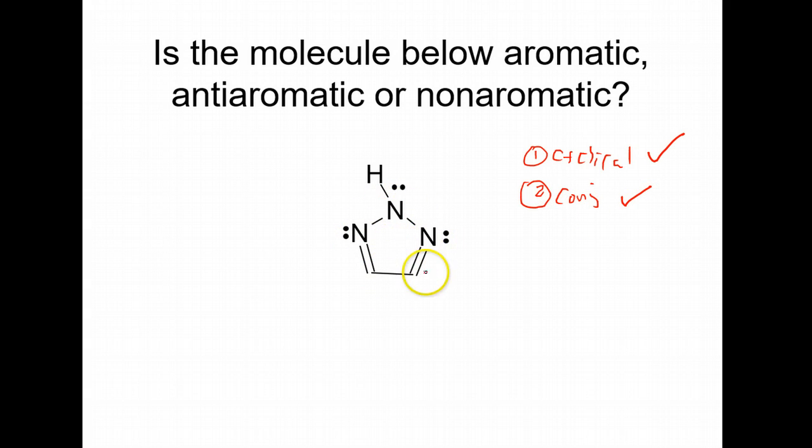I got pi bonds here, and then these lone pairs are going to be preoccupied in the resonance. That hydrogen is going to stick out. Number three: is it planar? Assume yes. Again, it might not be, but five-membered rings usually are planar. Number four: how many pi electrons? Two here, two here, and then these two are also preoccupied, so that's another two. That's six pi electrons.